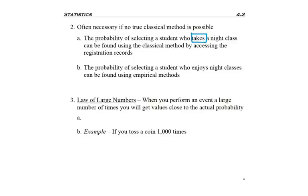But if I want to find the probability of a student who enjoys a night class, then I don't have existing information that I can draw on. I would have to survey students and divide the number who enjoyed it by the total number of students interviewed.